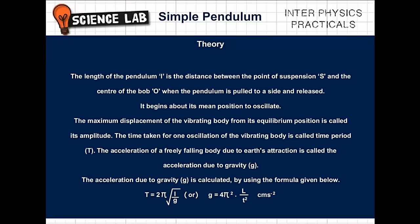Theory: The length of the pendulum L is the distance between the point of suspension S and the center of the bob O when the pendulum is pulled to a side and released. It begins to oscillate about its mean position. The maximum displacement of the vibrating body from its equilibrium position is called its amplitude.